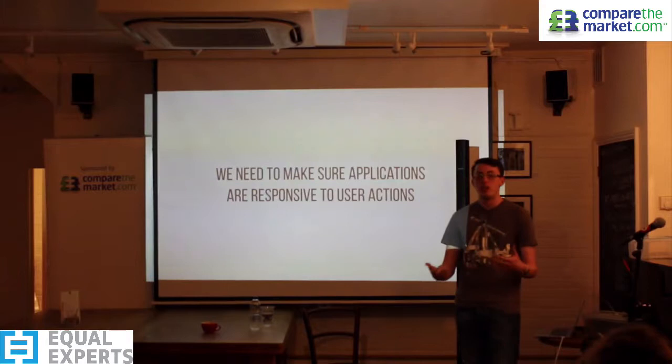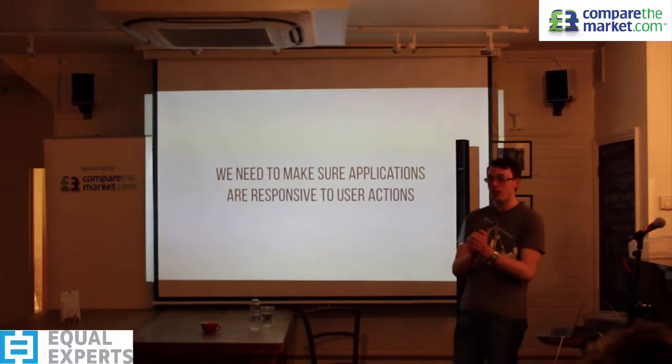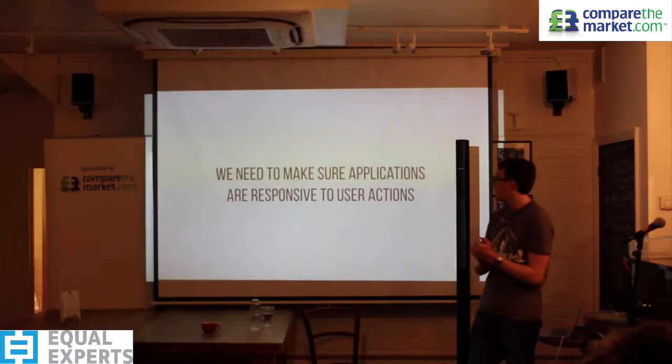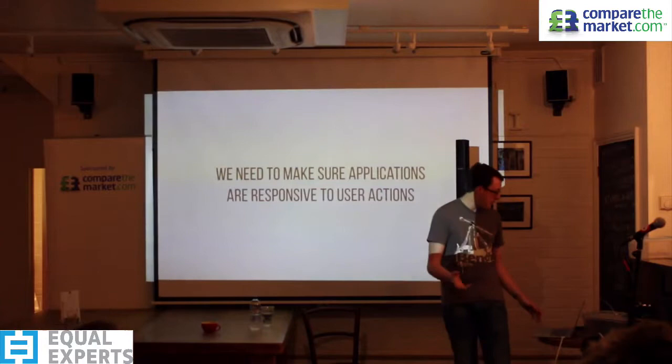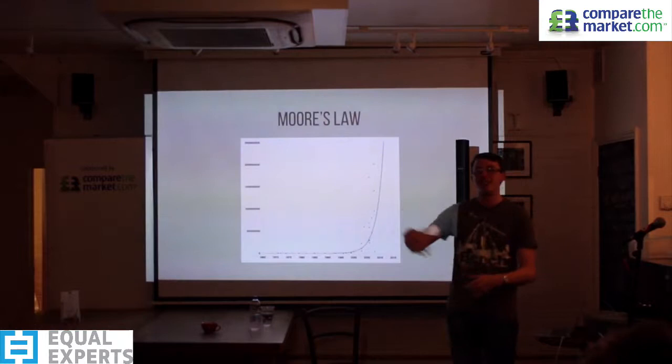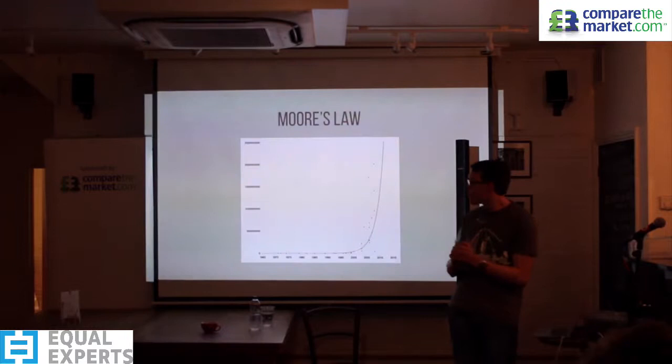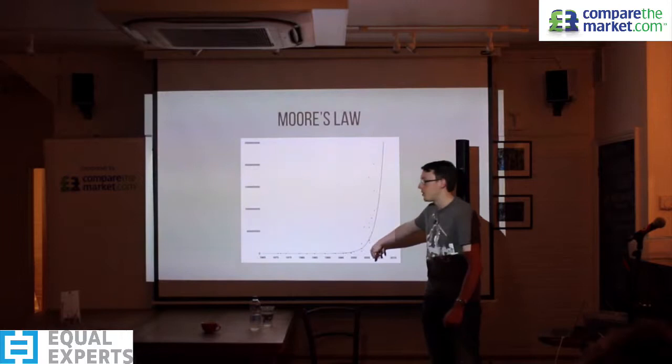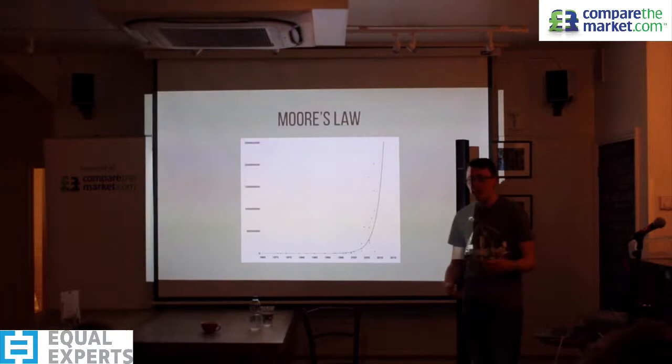Despite all this, we still have one key aim: we want the applications we write to be pleasant experiences for our end users — whether that's Jeff in finance or millions of people sharing thoughts in under 140 characters. We just assumed computers would keep getting faster and we could write worse code. But around 2003–2005, processing speeds started plateauing. The Pentium 4 at 3 GHz was kind of the peak.